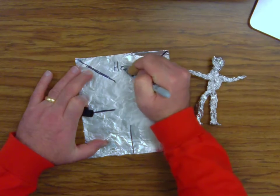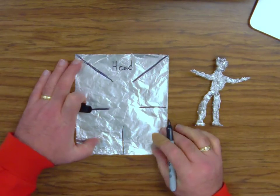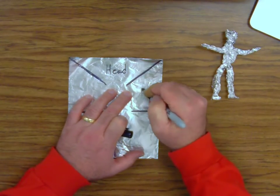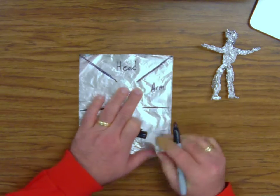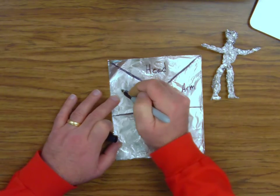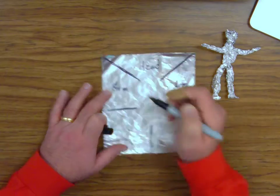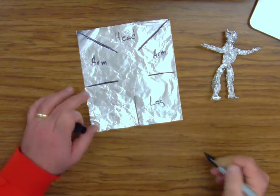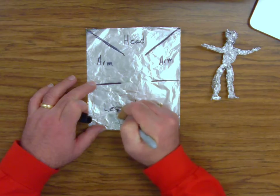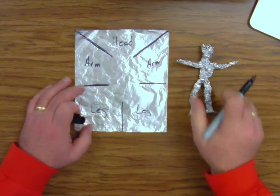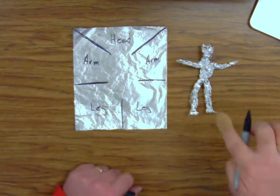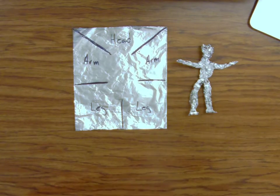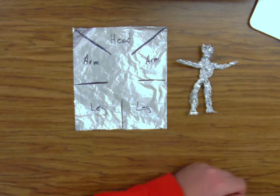So, I'm going to label these. This is our what? Our head. Okay. This is an arm. This is an arm. This is a leg. And, this is a leg. It's hard to believe it goes from this to this. But, it does. All right. Put your marker aside.